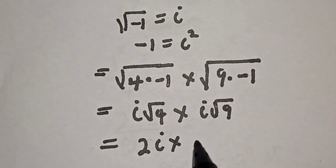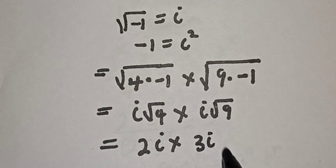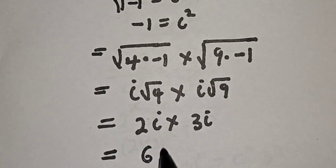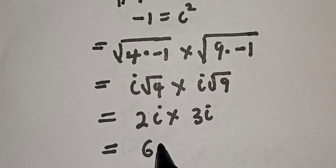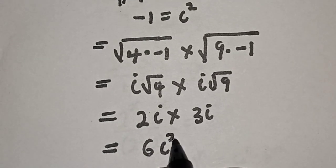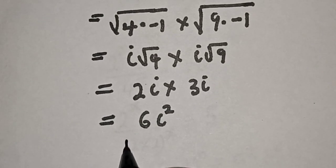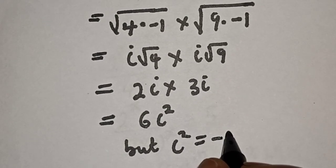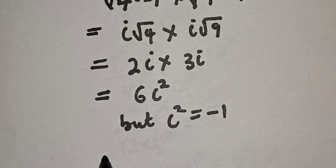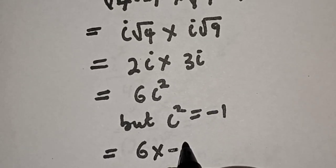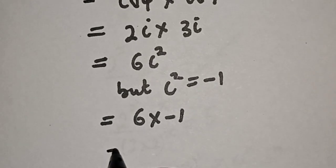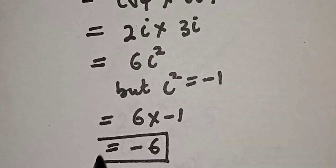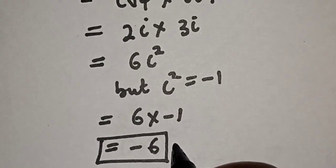Multiplied by square root of nine, which is three i. Now this is equal to two times three, times i times i — which is i squared. But remember that i squared is equal to minus one, so this is equal to six multiplied by minus one, which equals minus six. And this is the final answer.